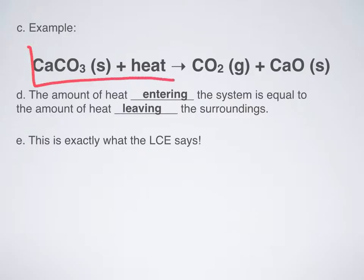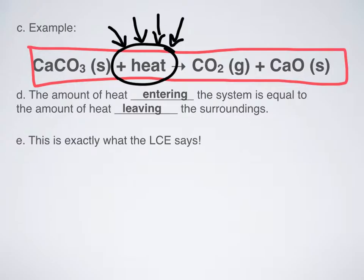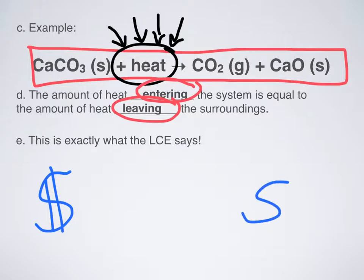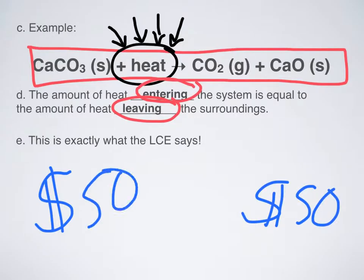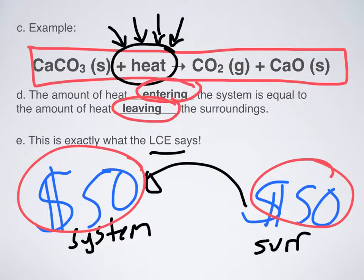Here's an example of an endothermic reaction. Just like in unit 12, heat is now a reactant, because heat is being absorbed in order for this reaction to occur. The amount of heat entering the system is equal to the amount of heat leaving the surroundings — using my $50 analogy again. I'm still the system, you are still the surroundings, but now you're giving me my money back. Energy is going from you to me. Still 50 bucks, nothing else happened. That's what the law of conservation of energy is about: energy gets passed around in the universe and it never gets destroyed.